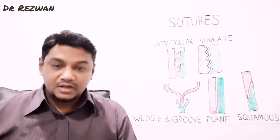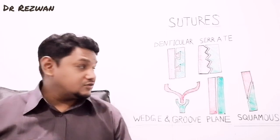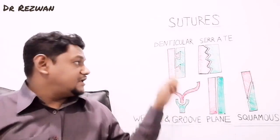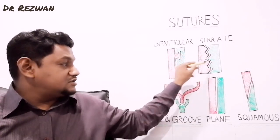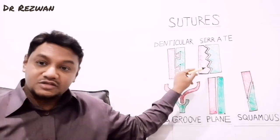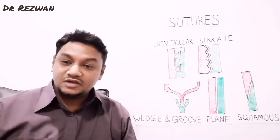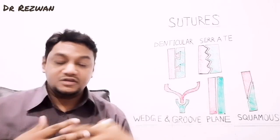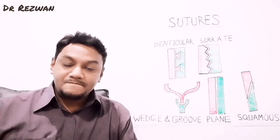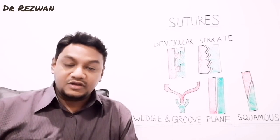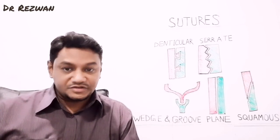Another type of sutural joint is the denticulate type. Compared to the serrated type — where the articular surface was saw-tooth-like — in the denticulate type the articular surfaces are waist-shaped, meaning one waist is insinuated with another. This type of joint is called the denticulate type of sutural joint.